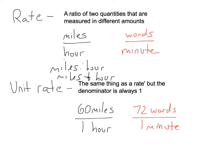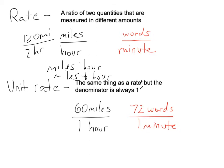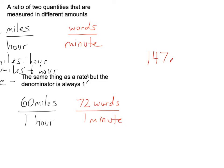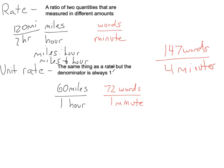So what's a unit rate? Well, it's the same thing as a rate, but the denominator is always one. So up here, miles per hour, as a rate, we could write that maybe as 120 miles per two hours. But the unit rate version of that would be 60 miles per one hour. That's the key, always one. 72 words per one minute. That's a unit rate, where something like 147 words per four minutes, that's a rate, but it's not a unit rate. It's a rate because it has different quantities, words and minutes. But it's not a unit rate because the denominator isn't one.